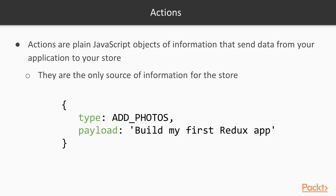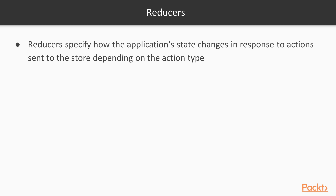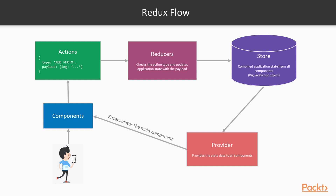The type is basically a command telling what kind of action this stands for. The payload is the data you would want to update in your state — think of it as the new data you want to update in your state. After the action returns this object, it is handled by the reducers. Sometimes an action may not have a payload because the payload is an optional property. Suppose you're just giving a command but don't need any data associated with it — the payload property is optional in that case.